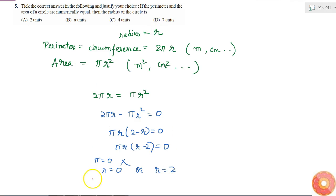Now, r cannot equal 0 because if r is 0, the circle has 0 radius, meaning it's just a point. There's no meaning in calling it a circle. So r cannot be 0. Therefore, the value of r equals 2. The answer is (a), 2 units.